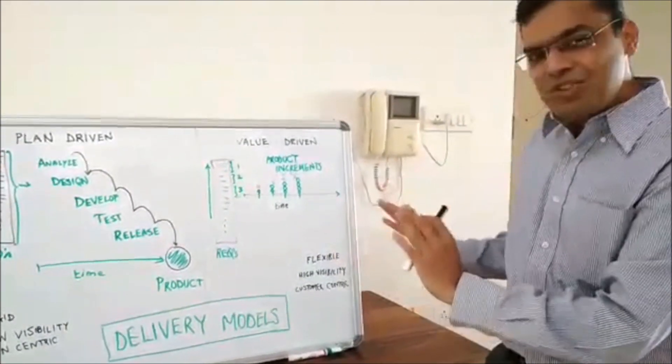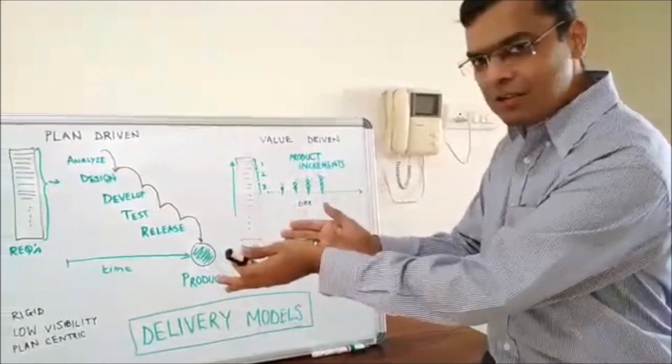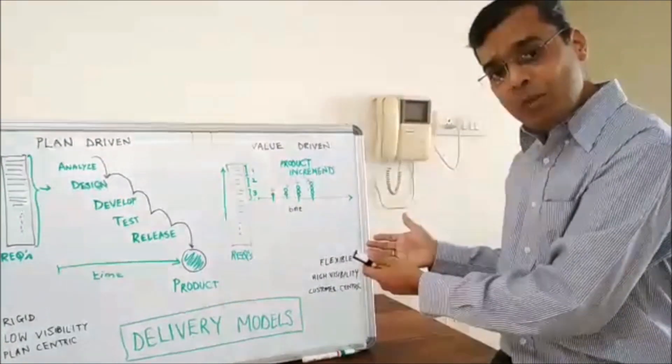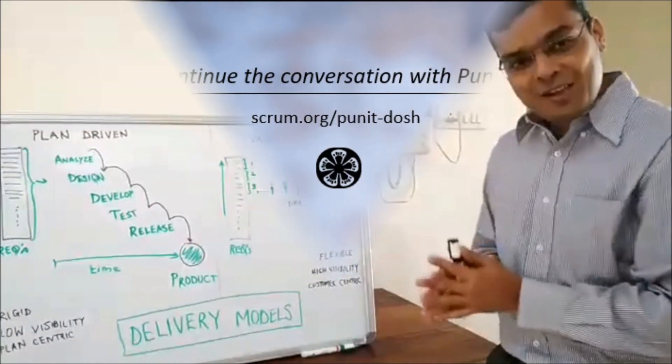So these are some of the changes while you shift from the plan driven model to a value driven model which is more agile or Scrum is one of the implementations of agile. Thank you.